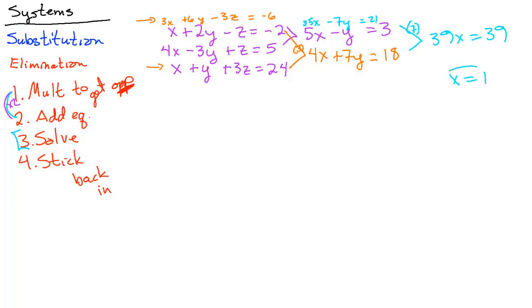Now we march backwards. Here's x equals 1, and you can stick it in either there or there, whichever one you like. You get 5 times 1 minus y equals 3. So we see that y has to equal 2.